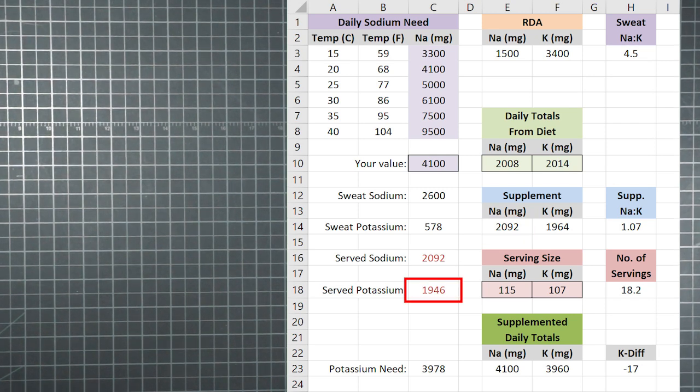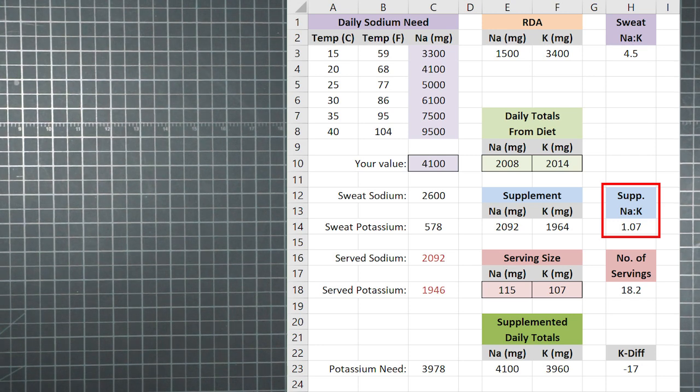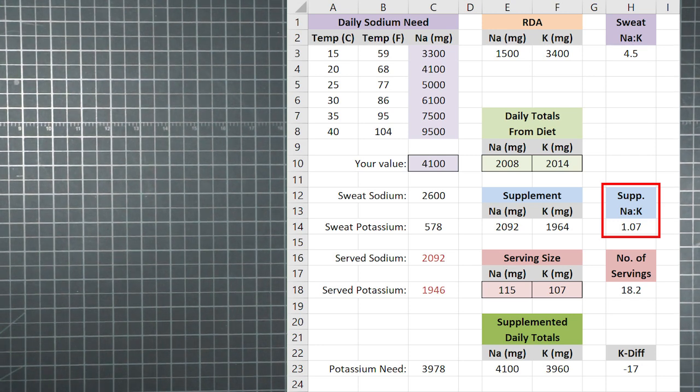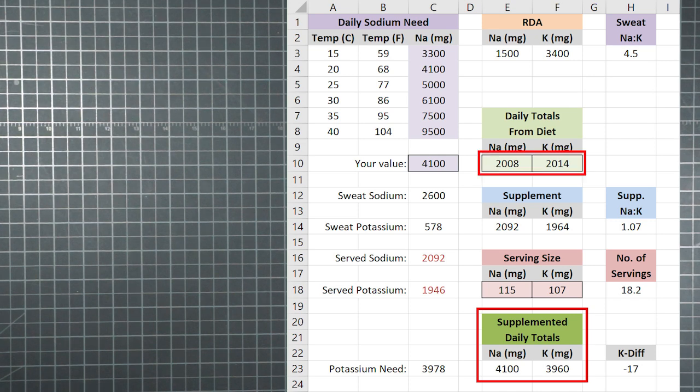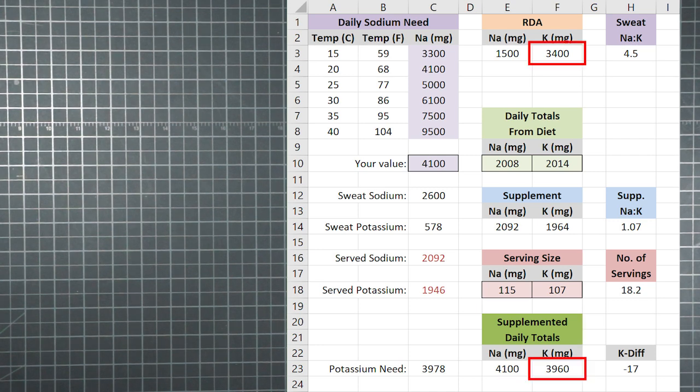If you take enough of this particular supplement with the electrolytes in that particular ratio, by the time you've gotten the 2,092 milligrams of sodium you needed, you will also have consumed 1,946 milligrams of potassium. You can see how closely that matches the supplement target, which makes sense because the ratio we chose was the same as recommended, apart from rounding differences behind the scenes.